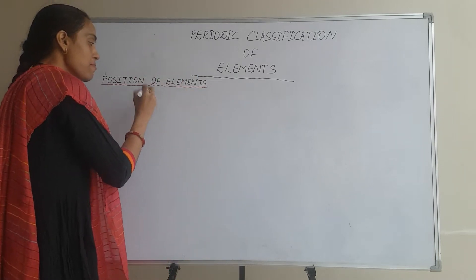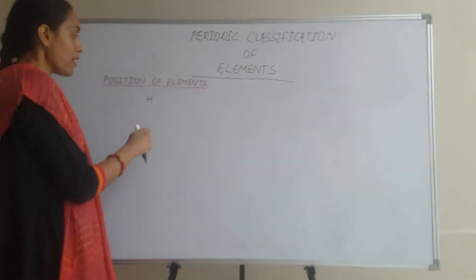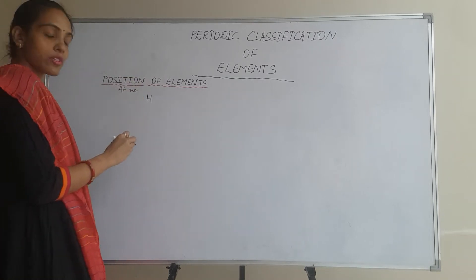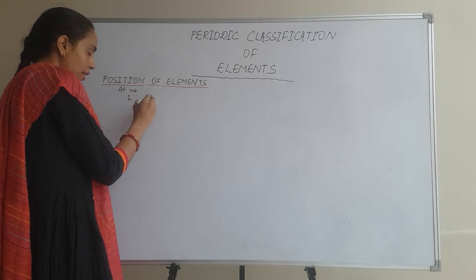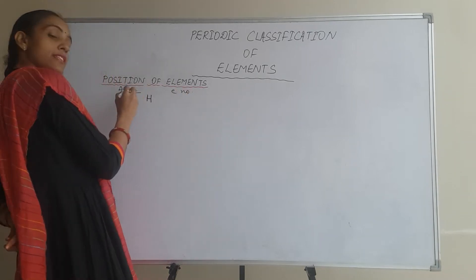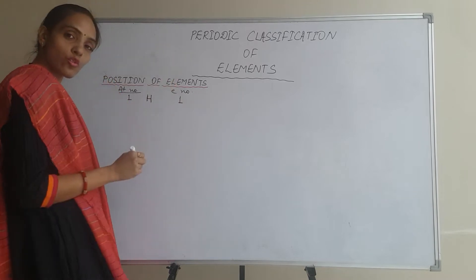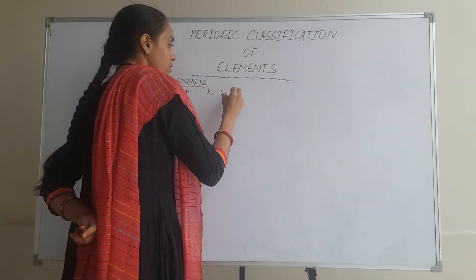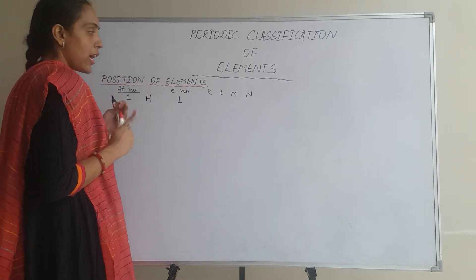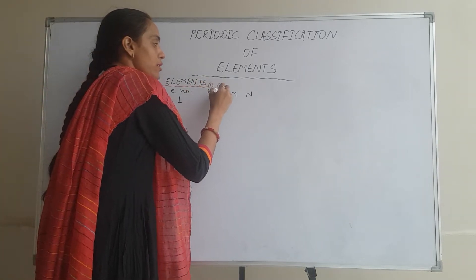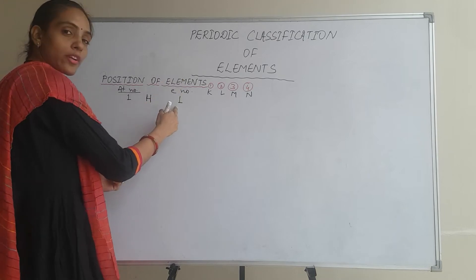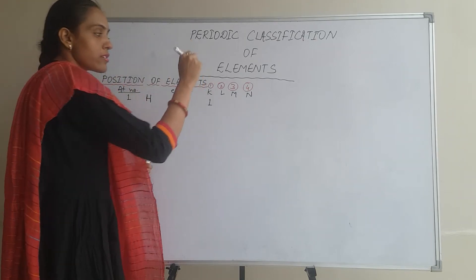We will begin with the simplest element, Hydrogen. As we discussed, atomic numbers were covered in class 9, so Hydrogen has the first atomic number. The number of electrons will always be the same as the atomic number, so electrons will also be 1. We have discussed electronic configuration in these four shells. Hydrogen has 1 electron only, and we know that in the K shell, 2 electrons can be filled. So the configuration is 1.